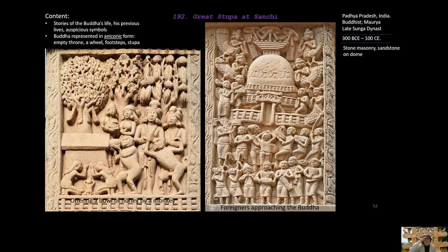The content of these architraves shows stories of the Buddha's life before he became a Buddha, along with important symbols of Buddhism. The Buddha is represented in an aniconic form — there is no image of the Buddha as a person. Instead, he is represented symbolically: the Bodhi tree under which the Buddha meditated represents him in one scene where he is being offered a bowl of honey by a monkey. In another image, the Buddha is represented by a stupa, in a scene described as 'foreigners approaching the Buddha.' The Buddha can also be represented as a Bodhi tree, a stupa, a wheel, a footstep, or an empty throne.